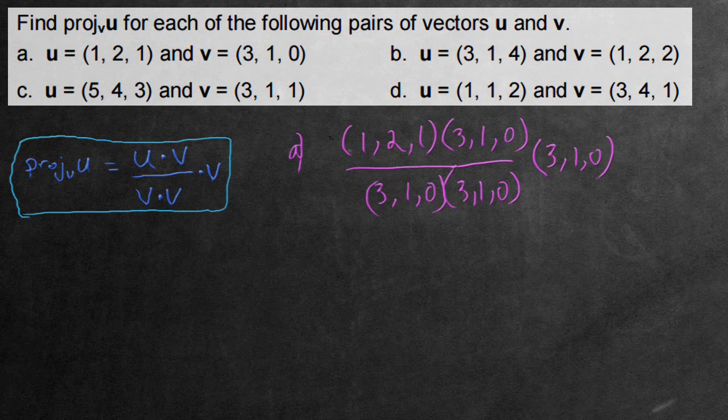So the first thing we're going to be doing is focusing on the numerator. We want to multiply these two vectors here. Now how do we multiply them? We focus on the individual components. So 1 times the first component, which is 3. So 1 times 3 equals 3. Then we add because that's what you do when you multiply vectors. Now going on to the middle component, we have 2 times 1, so add 2. Then 1 times 0 is just 0.